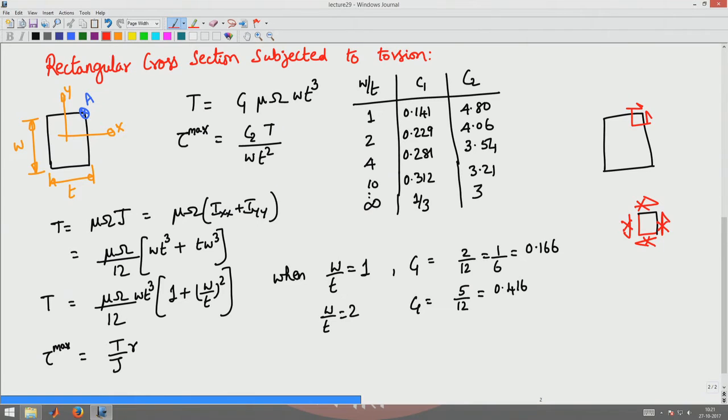Having seen that, what is of interest is the case when w by t tends to infinity. You can see it is very close even when it is 10. We will assume that w by t is tending to infinity, in which case the torque would be given by 1 by 3 mu omega w t cubed.